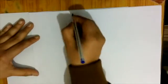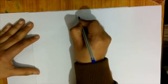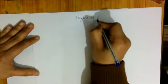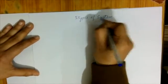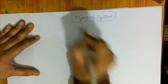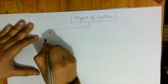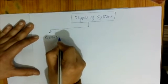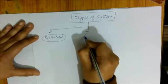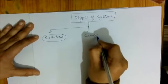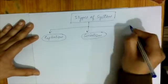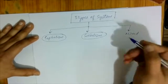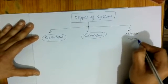Next, there are three types of economic systems in our whole economy. The first system is Capitalism. The second system is Socialism, or the socialist economy. And the third is Mixed Economy, or the Mixed Economic System.